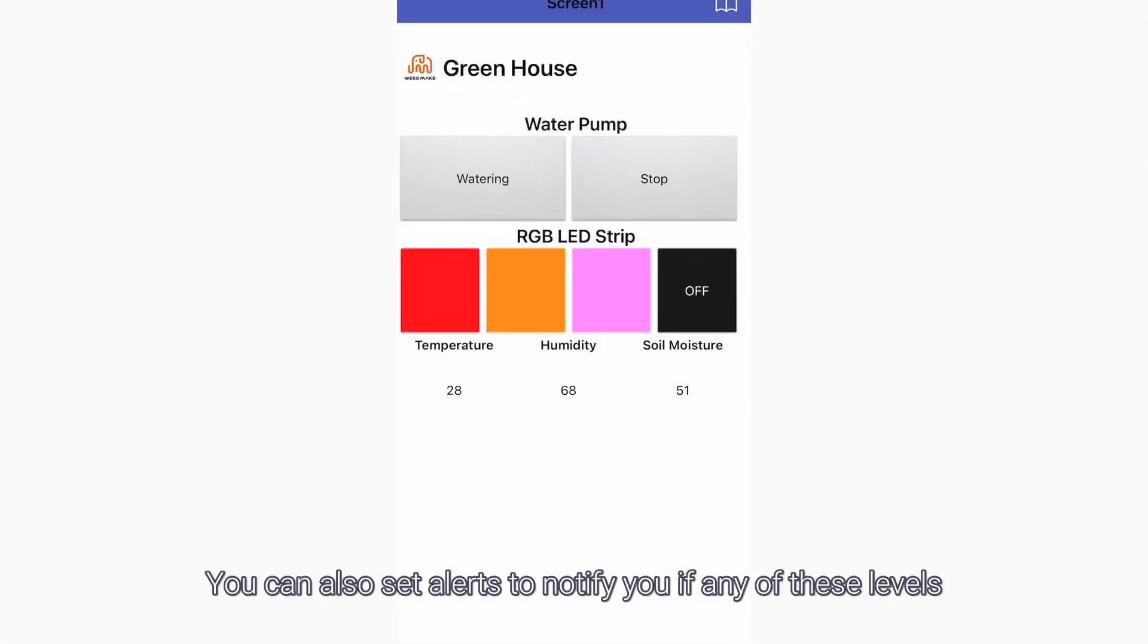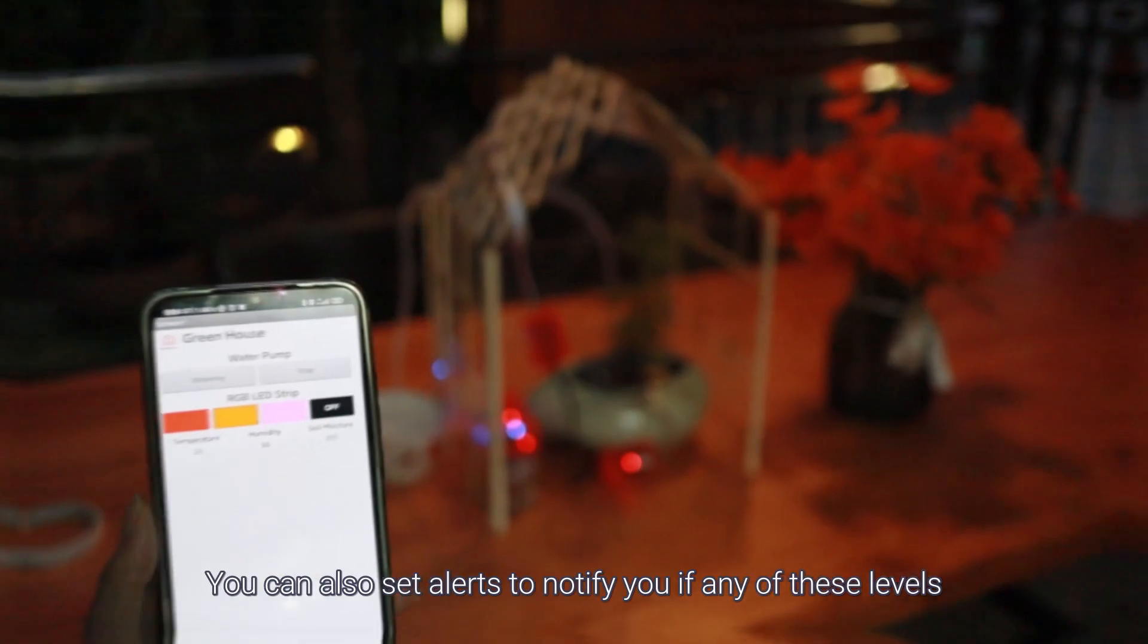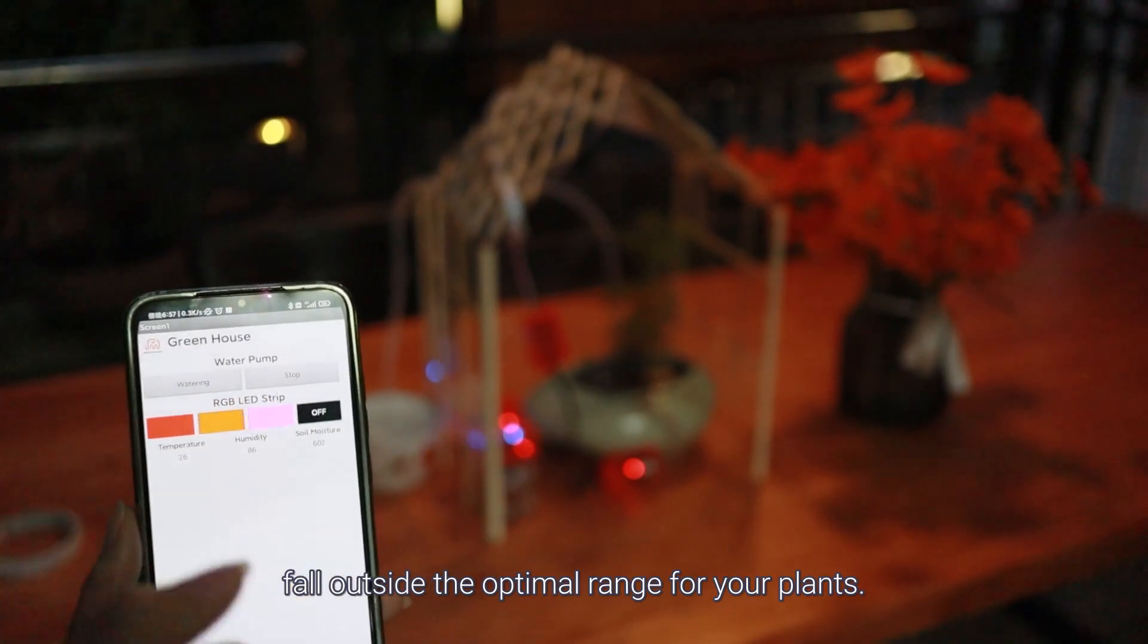You can also set alerts to notify you if any of these levels fall outside the optimal range for your plants.